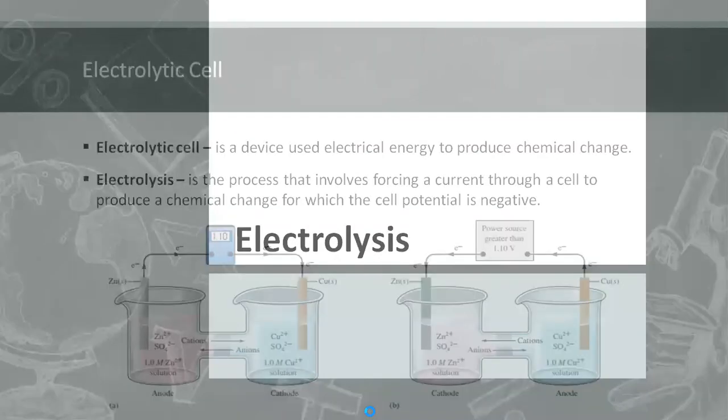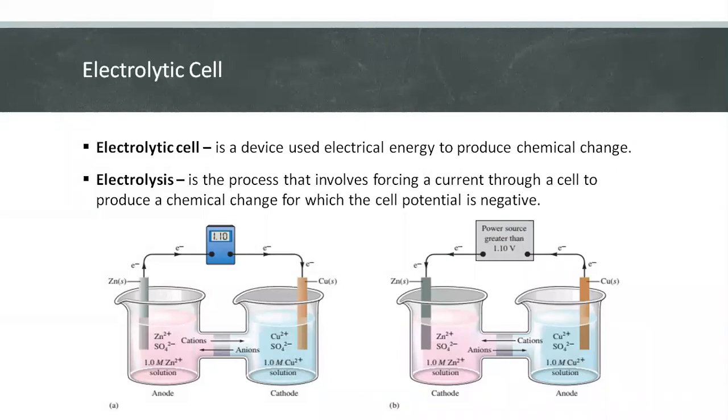Electrolysis. A galvanic cell produces current when a redox reaction proceeds spontaneously. A similar apparatus, an electrolytic cell, uses electrical energy to produce chemical change.